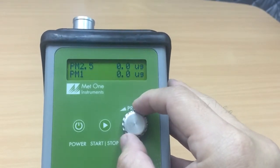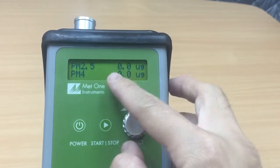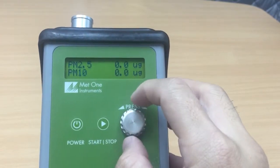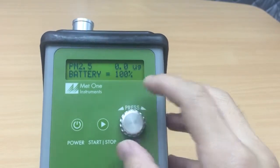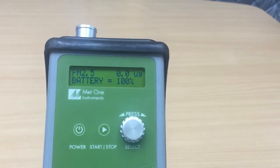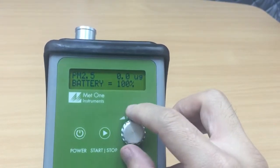So the instrument does measurements for PM1, PM2.5 of course it's being shown already, PM4 and PM10. So 1, 2, 3, 4, four different particle size sections. Battery right now is 100% as we have indicated.